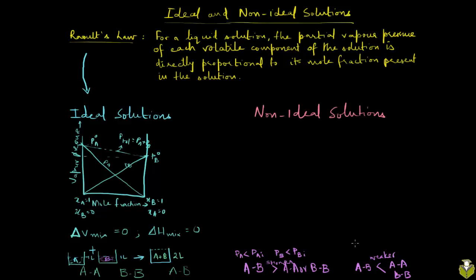In this case what happens is you will observe a positive deviation. PA is actually more than what you would expect in case of an ideal solution, and PB is more than what you would expect in case of an ideal solution.